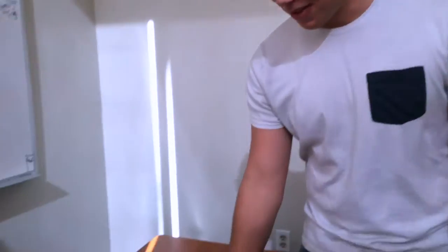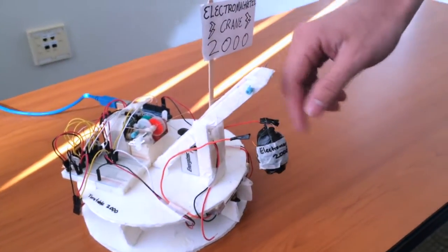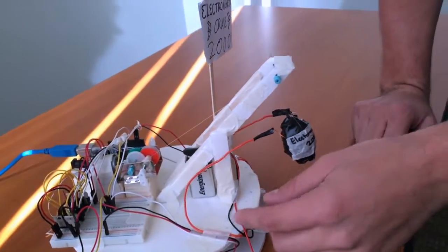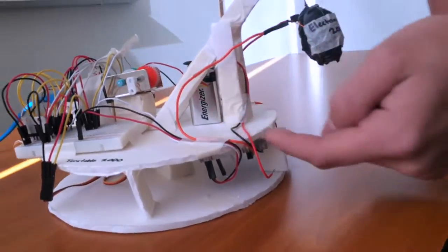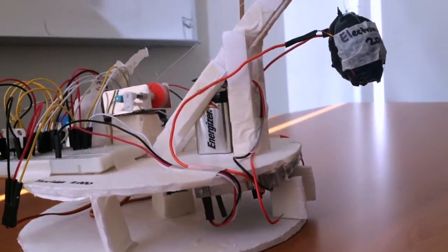Alright, lastly we have our electromagnet 2000, which is basically 99 feet of copper wire wrapped around a nail. And we control it by hooking a battery up to a manual switch. The battery outputs 9 volts, and then when we switch it, it will turn the electromagnet on so it can pick up metal objects.